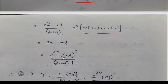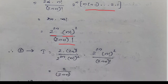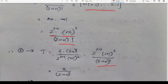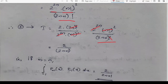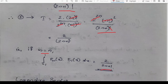So what we get is 2 raised to n into n factorial whole squared into 2n plus 1 factorial. Substituting back, we have 2 times 2n factorial divided by 2 raised to 2n into n factorial whole squared, times 2 raised to 2n into n factorial whole squared divided by 2n plus 1 factorial. Now 2 raised to 2n cancels, 2n factorial cancels, and n factorial cancels, so we get 2 by 2n plus 1. That means if m equals n, the integral from minus 1 to 1 of Pm of x into Pn of x dx equals 2 by 2n plus 1.